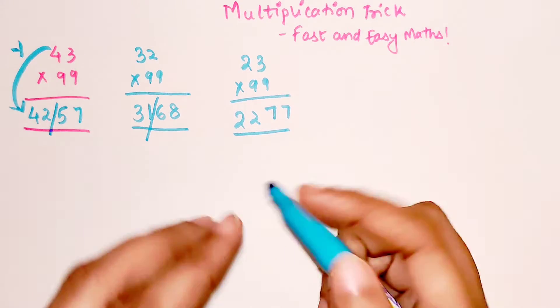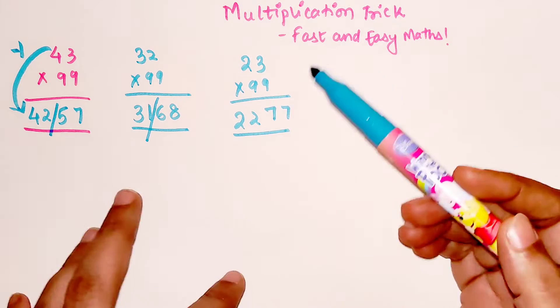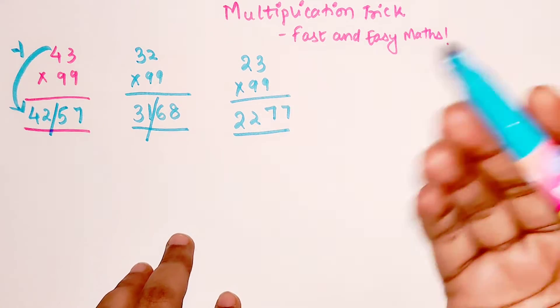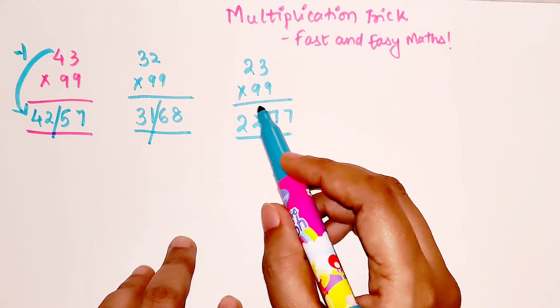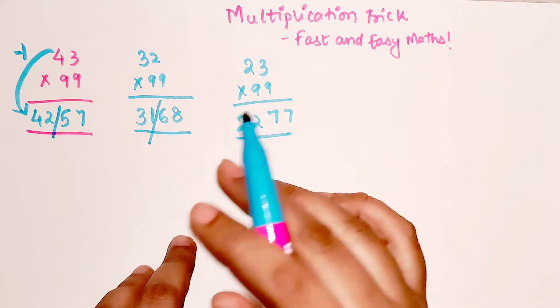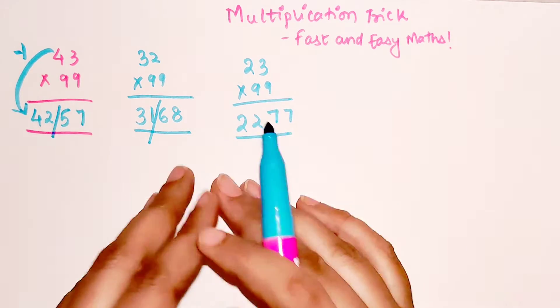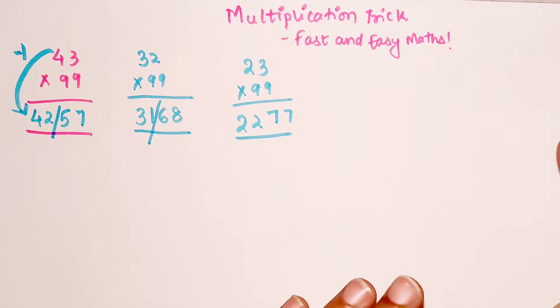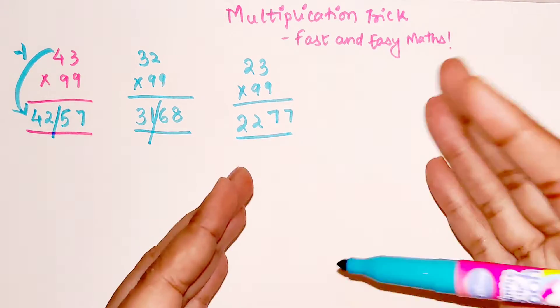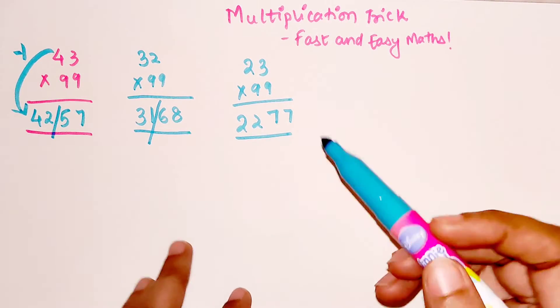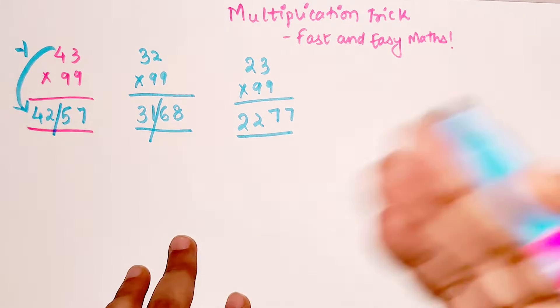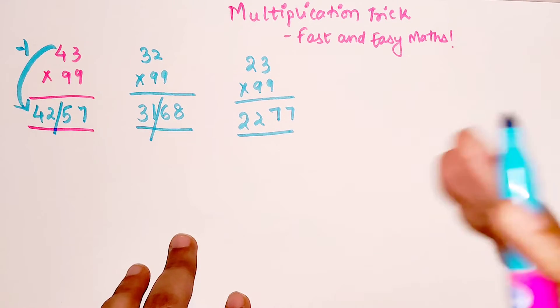The only thing for this one is, this will work for numbers which are equal to or greater than the number given in the multiplier. So this is basically going to work only for 99, 999, or 9999.